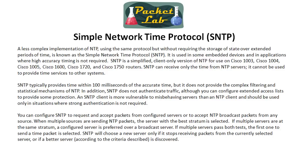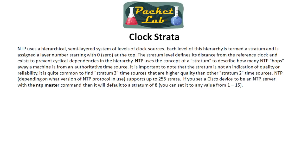NTP uses a hierarchical, semi-layered system of levels of clock sources — that's the strata model. Each level is assigned a stratum, starting with zero, which is your reference clock — atomic clock, GPS, whatever your super accurate time source is. Each subsequent level adds a hop, like hop count in RIP. The server connected to the atomic clock is stratum one, the next is stratum two, and so on. It's important to note that stratum is not necessarily an indication of quality or reliability. By default, Cisco devices will choose the time source with the lowest stratum, assuming that's more accurate — and generally that is the case. NTP version 3 has strata 1 to 15; stratum 16 means unreachable. Version 4 supports up to 256 strata.